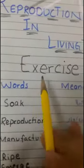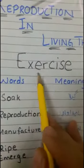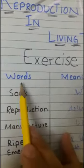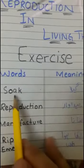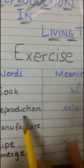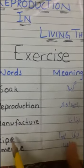Question number five: question and answer. Now write exercise words meanings. So: reproduction — banana (manufacture/to produce); emerge — nikalna (to come out).